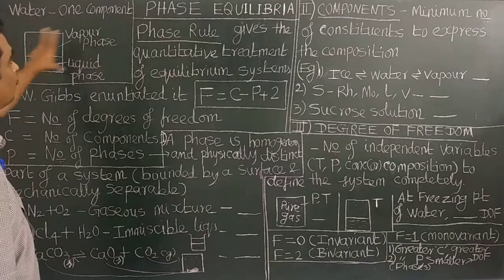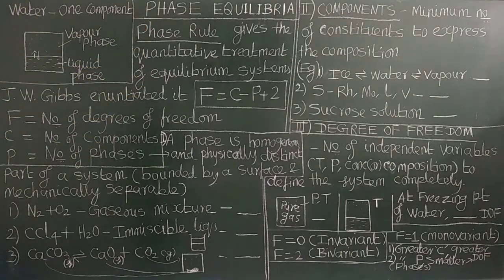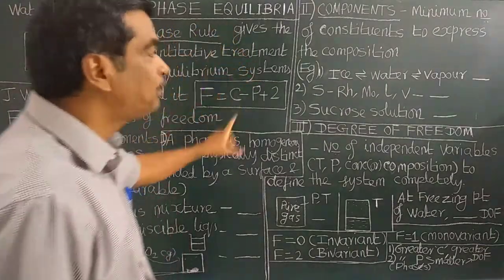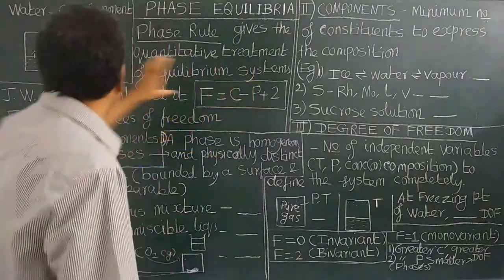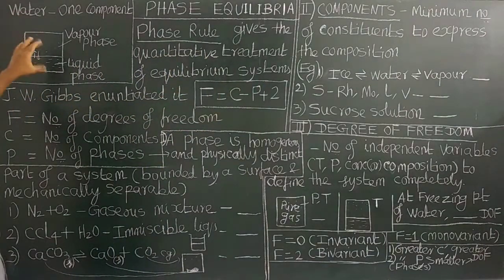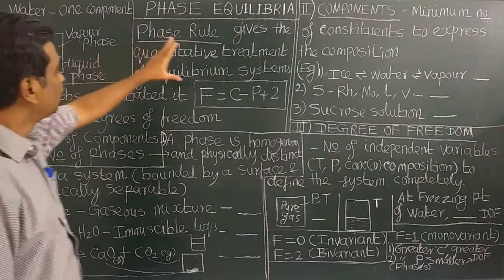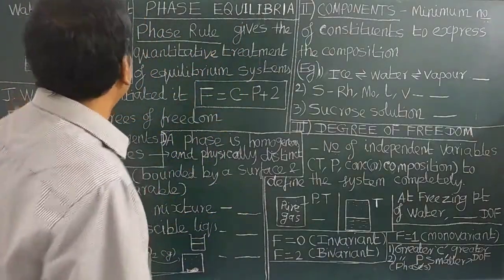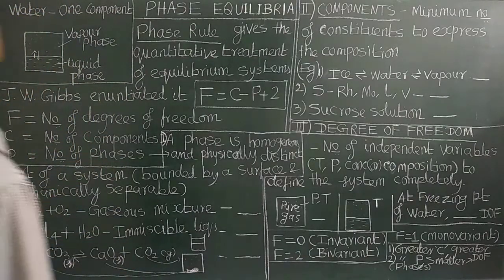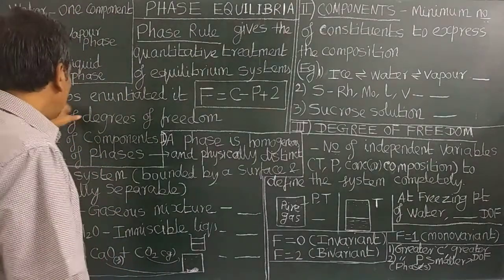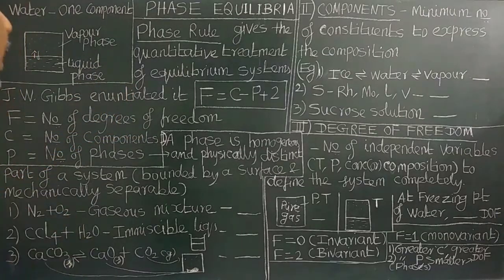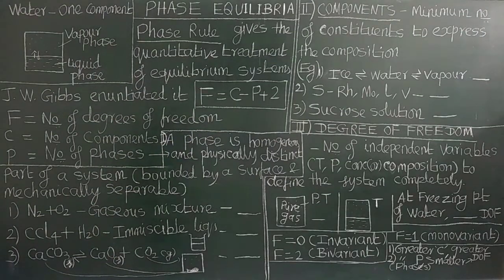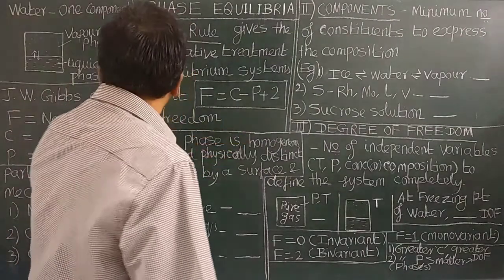Phase equilibrium — what is the phase rule? The phase rule gives the quantitative treatment of an equilibrium system. J.W. Gibbs derived thermodynamically the phase rule. The mathematical form of the phase rule was derived by J.W. Gibbs.